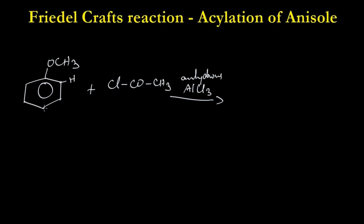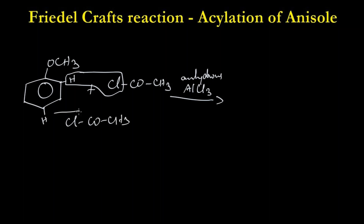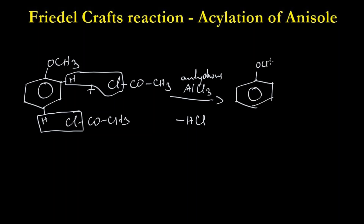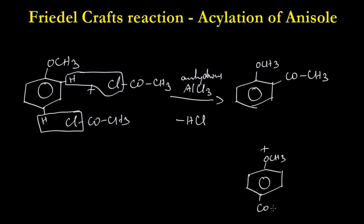The reaction takes place at both the ortho and para positions. At the ortho position, hydrogen and chlorine leave as hydrogen chloride. Similarly, if the reaction takes place at the para position, HCl is removed. We get a mixture of ortho and para isomers: in the ortho product COCH3 is attached at the ortho position, and in the para product COCH3 is attached at the para position.